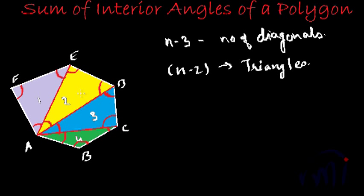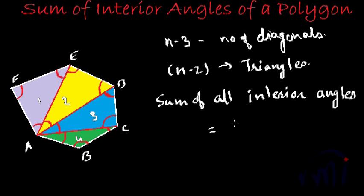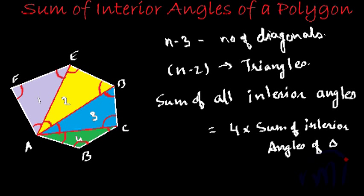No angle is coming from outside, and no angle of any triangle is getting wasted. So the sum of all the interior angles will be four times the sum of interior angles of a triangle. The sum of interior angles of a triangle is 180 degrees. So the sum of interior angles of a hexagon will be four times 180, that is 720 degrees.